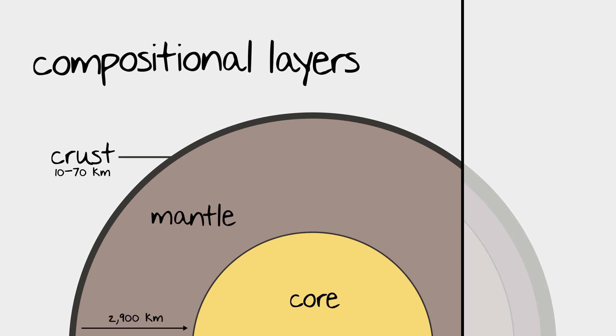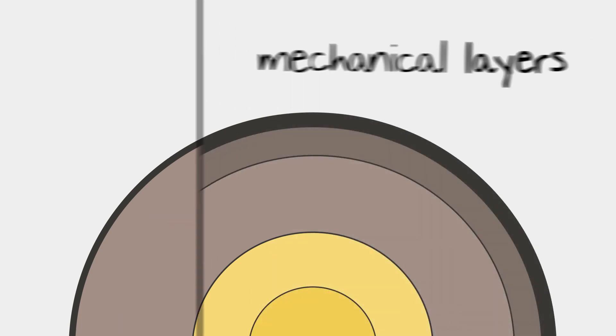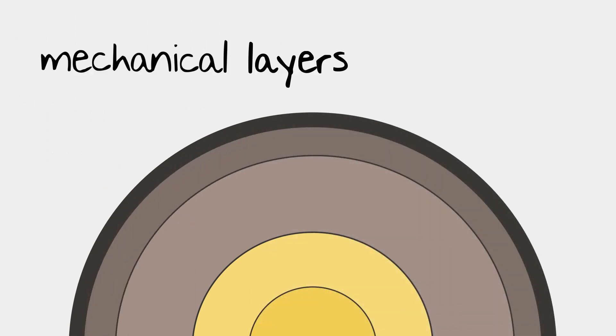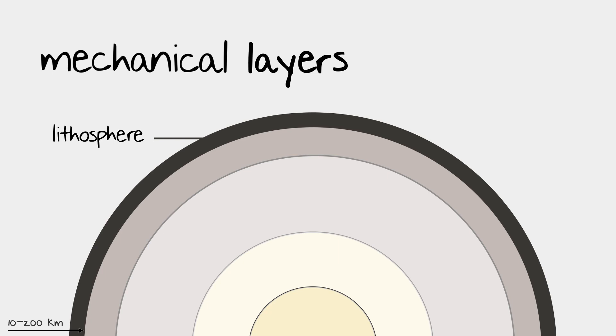However, if we take a look at how the inside of the Earth behaves, we can divide them even further into mechanical layers. Starting from the outside working in, the lithosphere is the outermost layer of the Earth, which contains the entire crust and the topmost layer of the mantle.